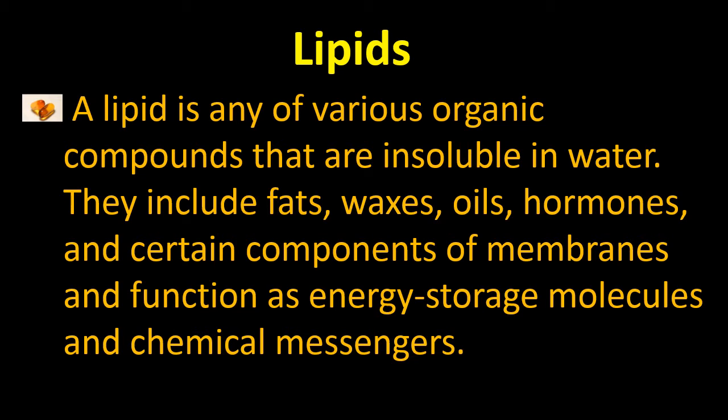One gram of carbohydrate gives us 3.8 calories of energy, while one gram of lipid gives us 9 calories of energy. Although 9 is bigger than 3.8, lipids are the second source of energy — first you consume carbohydrates or glucose, and after that lipids are used. This is because although lipids are higher in energy, they are not easily breakable, so our body utilizes carbohydrates first.